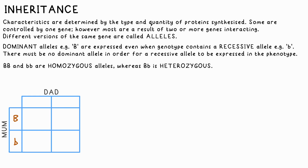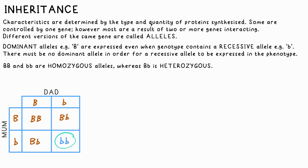My parents have brown eyes, but they both have heterozygous alleles for eye color. There are three different outcomes of these combining, with a 25% chance of making me — that's little b, little b. So I'm not so much one in a million, more one in four.